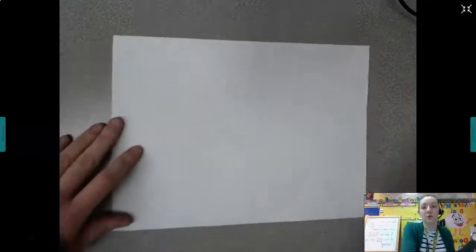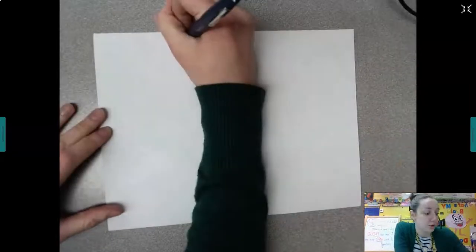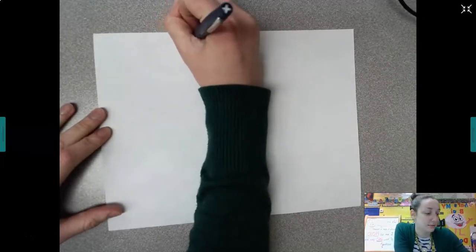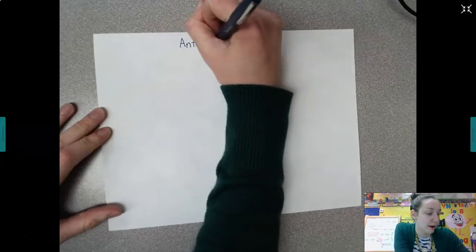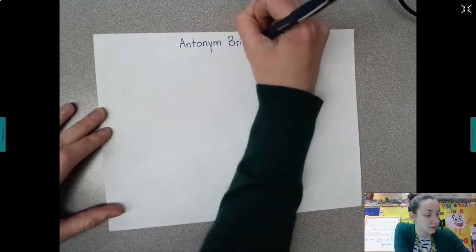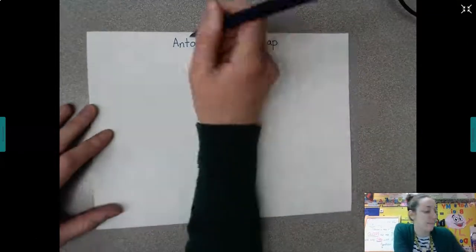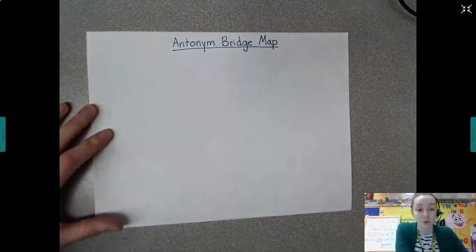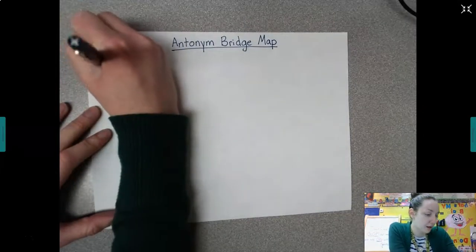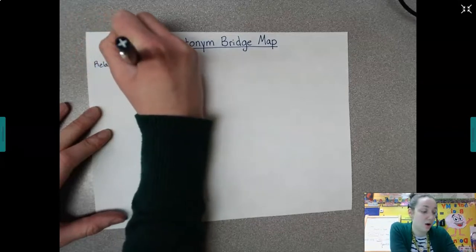What we're going to do today is create a bridge map showing different examples of antonyms. As always with our thinking maps, you're going to have to make sure that you have a title — so this is going to be our antonym bridge map. As always with our bridge maps, it's important to have a relating factor, and that's how the items on our map relate to each other, how they are compared with each other.